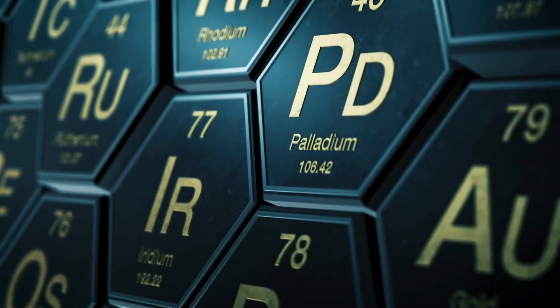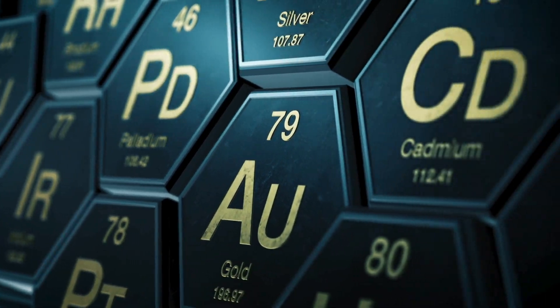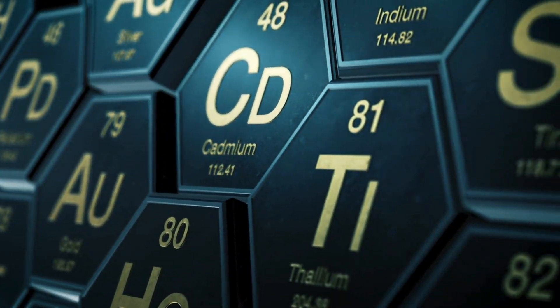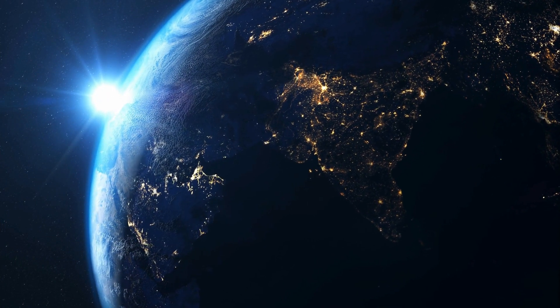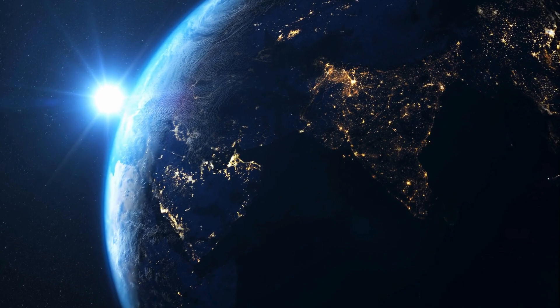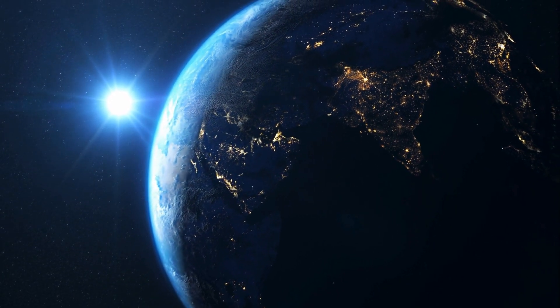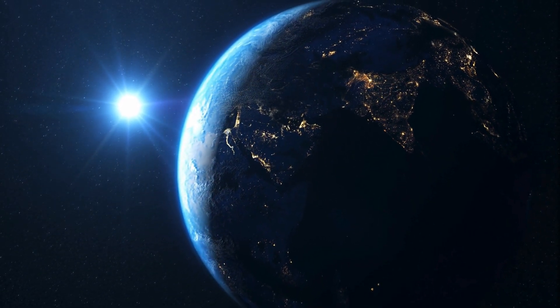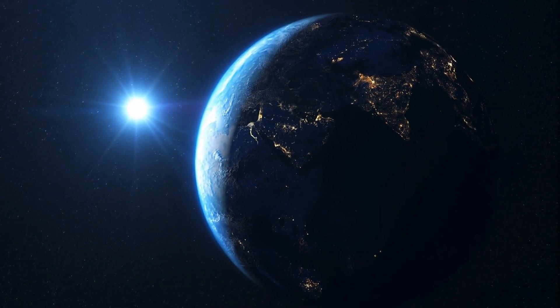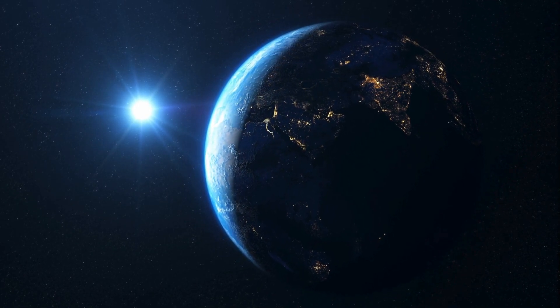Because iron is the last element created during a star's life cycle before it becomes a supernova, it is found in much larger quantities in the universe. In fact, after iron, elements like gold and silver are produced in much smaller amounts during the explosion, which is why they are so rare in the universe and on Earth.